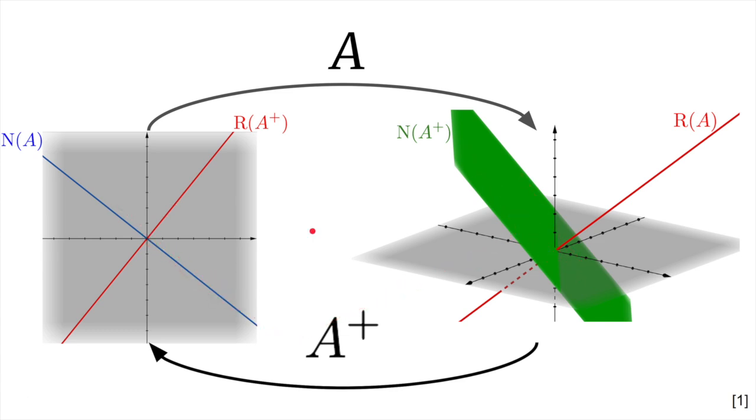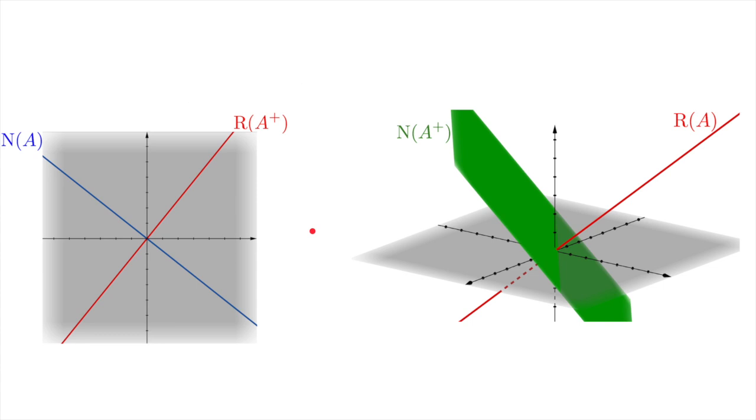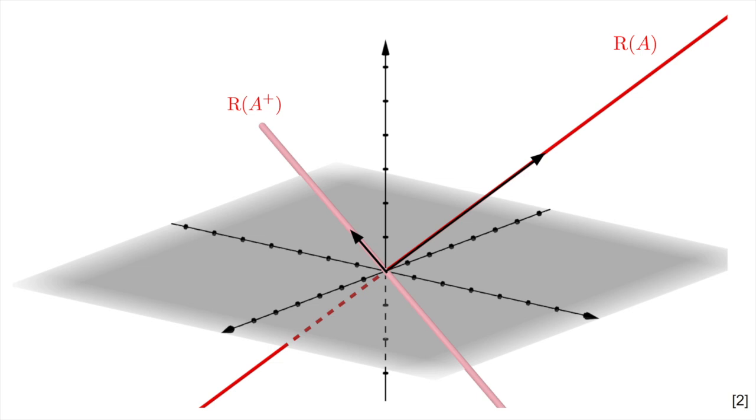That said, this is not the normal picture given when discussing the four fundamental subspaces. Normally we have the range in the null space of A transpose rather than A+. So what's the relationship? Where does the transpose fit into all of this? To get a sense of this, we're going to have to take a deeper dive into another look at what A is actually doing.